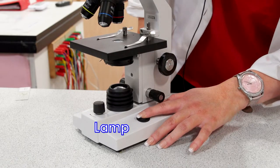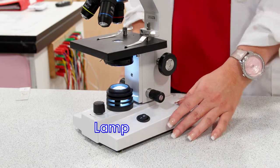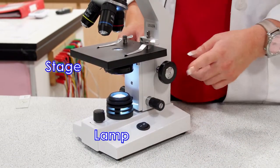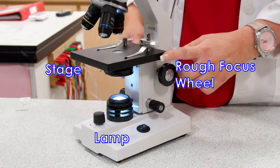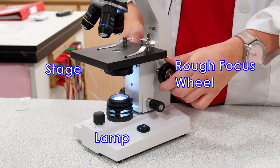You have a lamp down here which you can turn on using this switch. This dark piece of metal is called the stage, and you can use the rough focus wheel to make sure that your stage is at the lowest point before viewing. You can use the rough focus wheel to move the stage up and down.